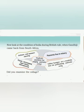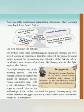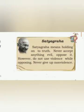Gandhiji decided to protest against this. The British ruled India by threatening and killing the Indians. We were forced to obey all their rules. Gandhiji exhorted the people to stand united against the harassment and injustice of the British rulers. He devised new means of protest like Satyagraha for the fight against the British. Satyagraha means holding on to truth. Never accept anything evil — oppose it. However, do not use violence while opposing.